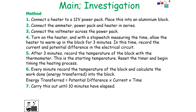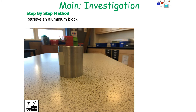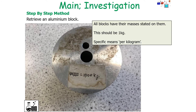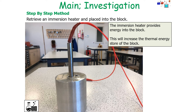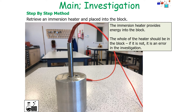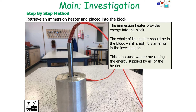Carry this out until 10 minutes have elapsed. You retrieve an aluminium block — most aluminium blocks have their masses stated on them. Specific means per kilogram, so the ideal scenario is to have a block which is 1 kilogram. You retrieve an immersion heater and place it into the block; the immersion heater provides thermal energy into the block, increasing its thermal energy store. The whole heater should be in the block — if it's not, it's an error in the investigation, because we're measuring the energy supplied by all of the heater. In the picture shown, half of the heater is not actually heating the block but is heating the air.